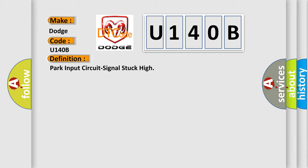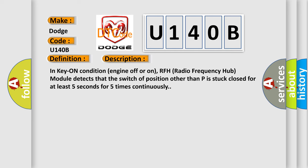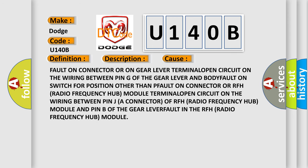The basic definition is: PARC input circuit signal stuck high. In key-on condition, engine off or on, the RFH (radio frequency hub) module detects that the switch of a position other than P is stuck closed for at least five seconds, five times continuously. This diagnostic error occurs most often due to: a fault on the connector or gear lever terminal, an open circuit on the wiring between pin G of the gear lever and body, a fault on the switch for a position other than P, a fault on the connector or RFH radio frequency hub module terminal, an open circuit on the wiring between pin J of the RFH module connector and pin B of the gear lever, or a fault in the RFH radio frequency hub module itself.